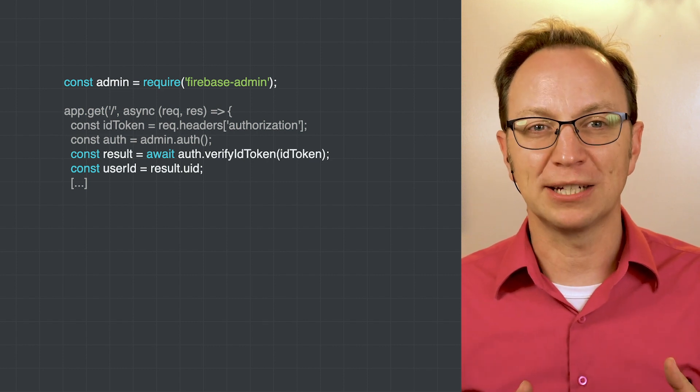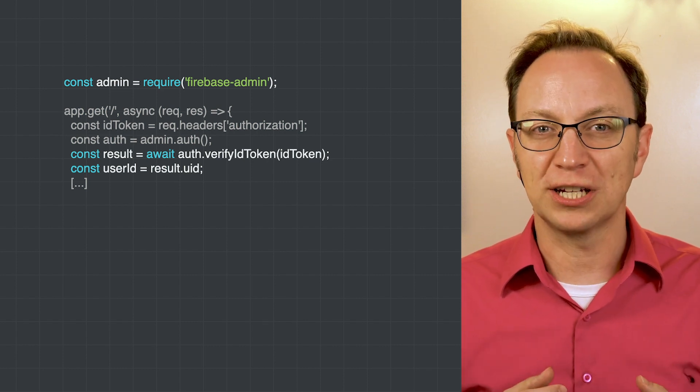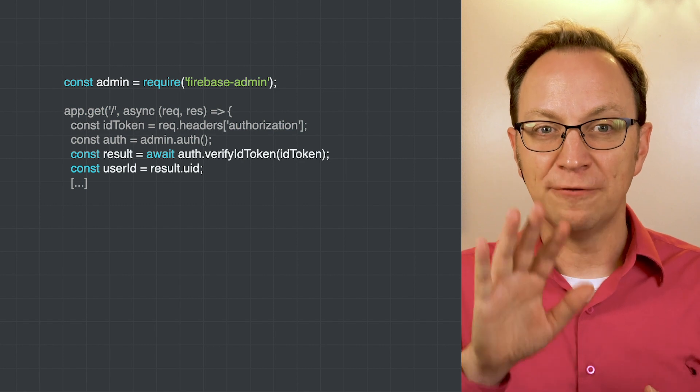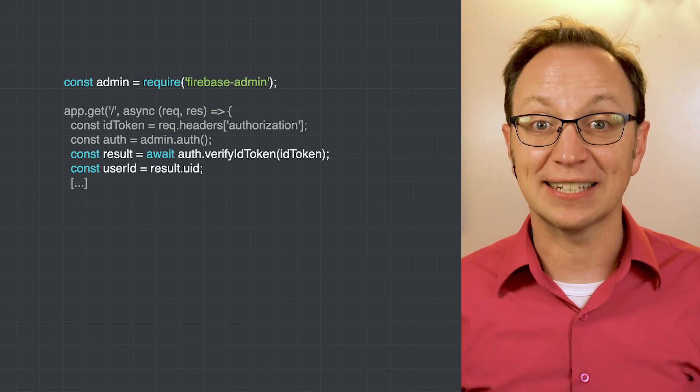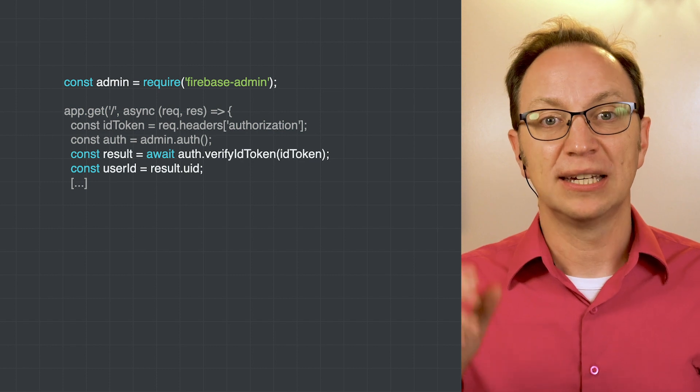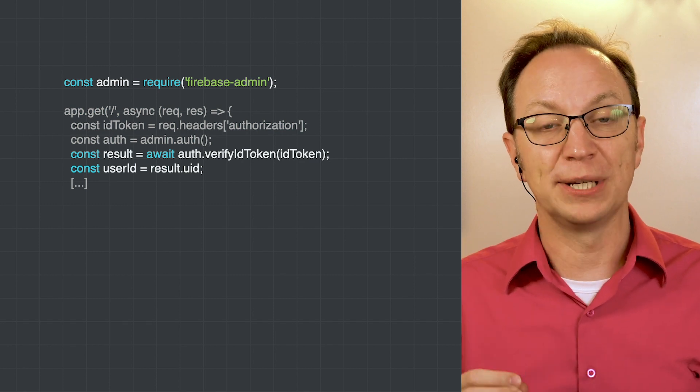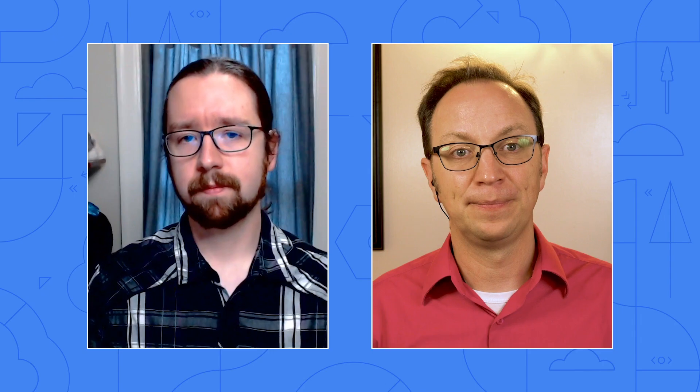And how does she extract the user ID from it? As mentioned in our previous video, Anna has limited experience with cryptography. That's where the Firebase SDK comes in. If Anna imports this package into her server-side code, it has a method called verifyIDToken that does just that. It verifies the token and extracts the user ID from it if it is valid. If the token is invalid — for example, if a malicious user is attacking Anna's REST API — the verifyIDToken call will not succeed and Anna's code can return an error.